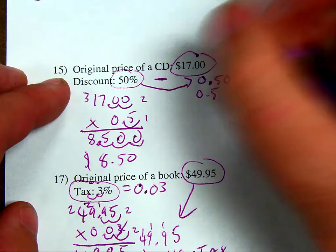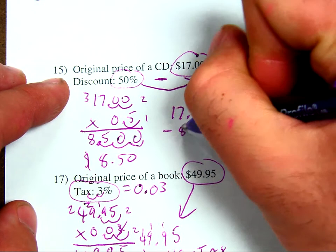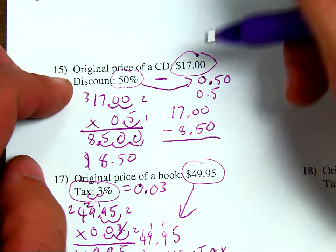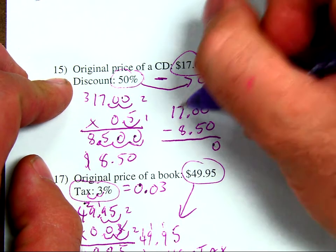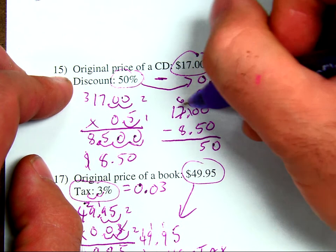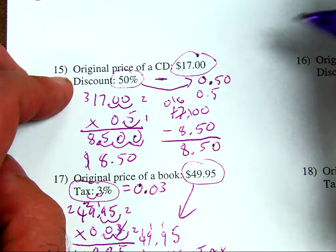I can now subtract 17.00 minus $8.50 or 8.5. 0 minus 0 is 0. 0 minus 5 I have to borrow. It's going to be 5. 6 minus 8 I have to borrow. 16 minus 8 is 8. My answer is 8.50.